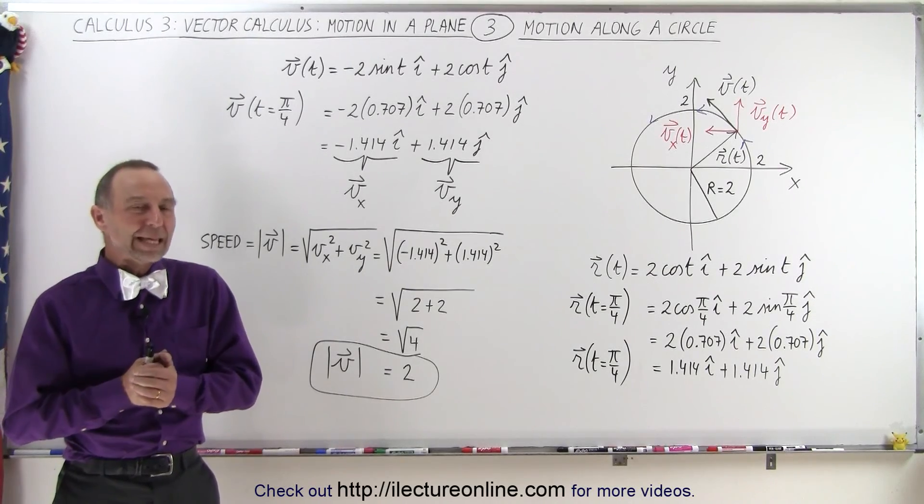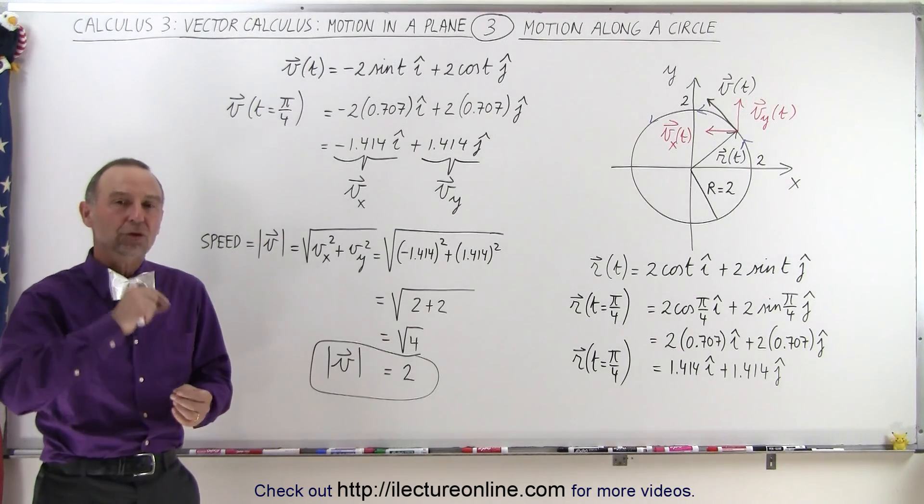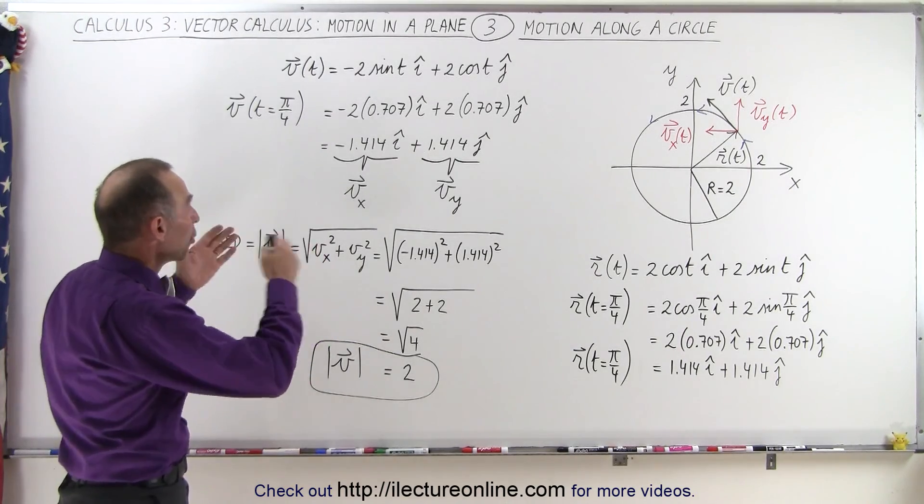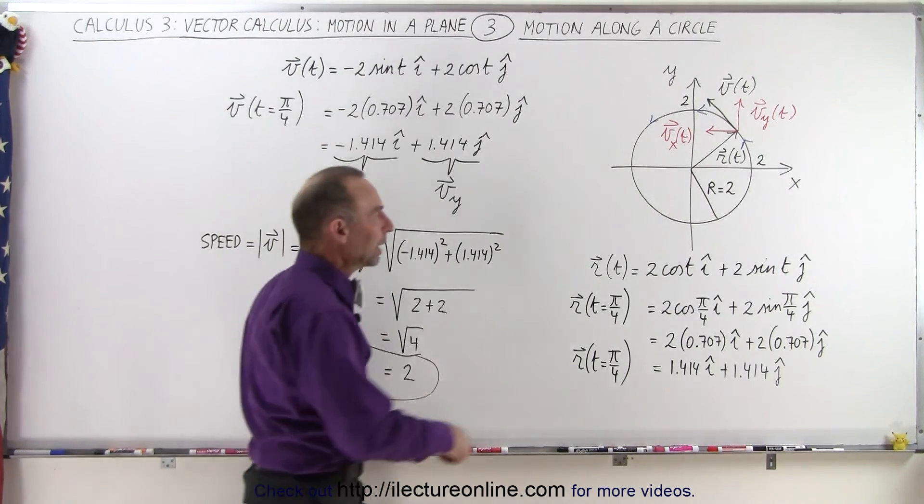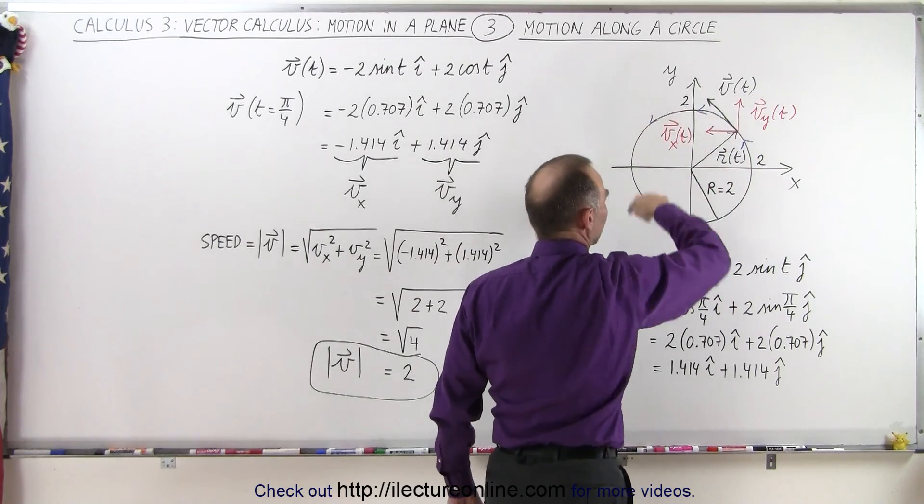Welcome to our lecture online. Here we're going to learn how to manipulate motion around the circle, again using vector calculus in two dimensions to describe motion in a plane. The radius of the circle is equal to 2, and notice we're moving along the circle in this direction right here.